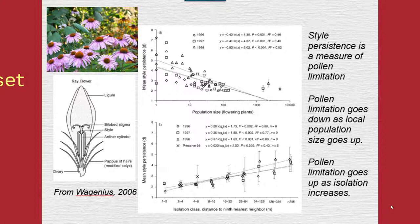Style persistence is really a measure of pollen limitation. The style is a part of the female structures of a flower responsible for receiving pollen. Pollen limitation goes down as the local population size goes up. In the bottom figure, looking at different isolation classes versus mean style persistence along the y-axis, as you can see across several years, pollen limitation goes up as isolation increases.